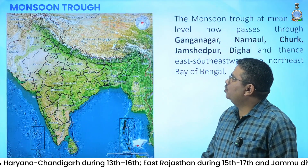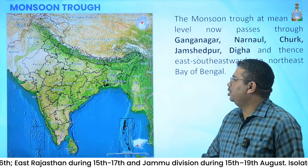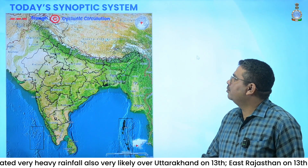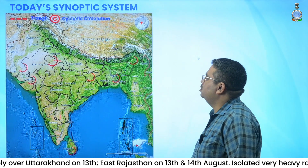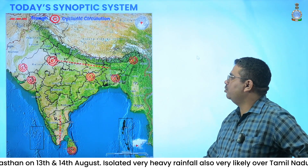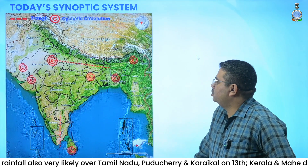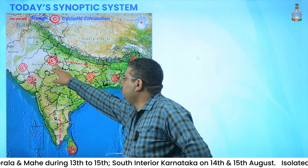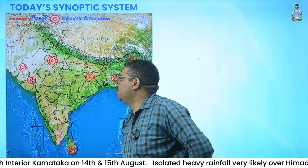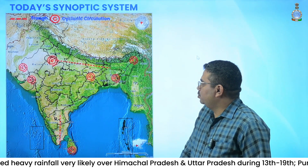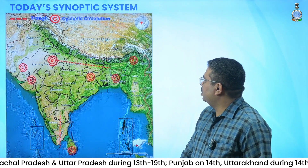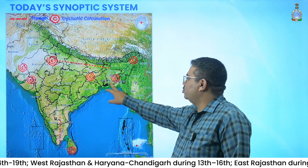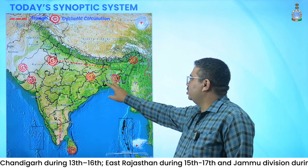If we see today's monsoon trough, it is also running roughly along the normal positions, shown here by red color. Regarding today's synoptic systems: yesterday's cyclonic circulation over northwest Madhya Pradesh is today seen over northeast Rajasthan. The cyclonic circulation over southeast Pakistan adjoining southwest Rajasthan is today also persisting in lower tropospheric levels. There is a major cyclonic circulation seen over south Bangladesh and adjoining north West Bengal region, which extends up to middle tropospheric levels.